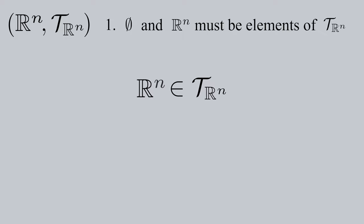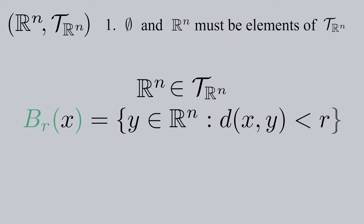Rn itself is in the topology because by definition of the open Euclidean n balls, for any point of Rn, there exists an open ball of radius R centered at that point where the ball is a subset of Rn.